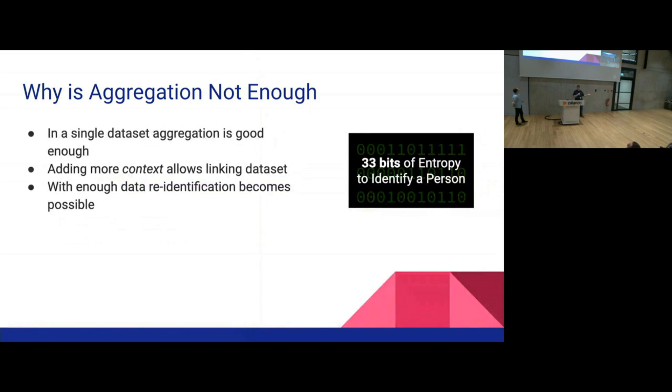So why is aggregation not enough? In general, when you're looking at a single dataset, aggregation is normally good enough. But as you start adding more context to the data, you start being able to connect data points. Maybe you can connect several data points to start identifying a specific group. The real risk we're trying to avoid is re-identification. There was an article that said with 33 bits of entropy, you can identify anybody. We're about 8 billion people in the world, we only need 33 bits of data to enumerate everybody.